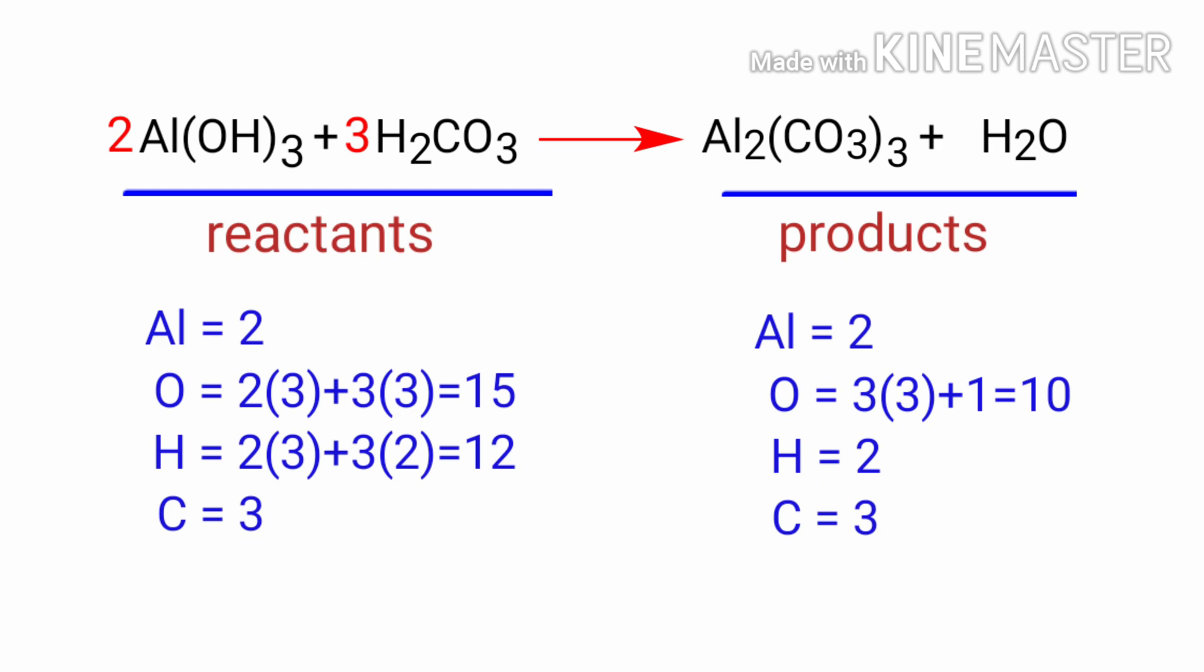Now we need to balance the hydrogen and oxygen atoms. To do this, we need to put a coefficient of 6 in front of H₂O. The equation is now balanced. There are two aluminum atoms, 15 oxygen atoms, 12 hydrogen atoms, and 3 carbon atoms on both sides.